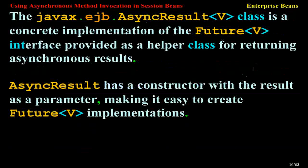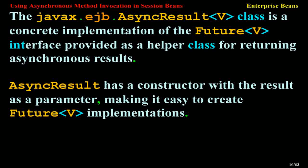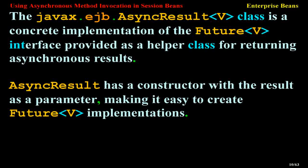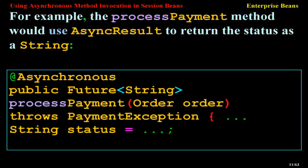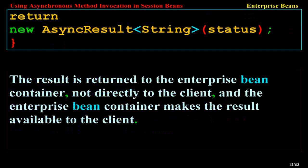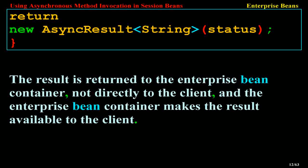The javax.ejb.AsyncResult<V> class is a concrete implementation of the Future<V> interface provided as a helper class for returning asynchronous results. AsyncResult has a constructor with the result as a parameter, making it easy to create Future<V> implementations. For example, the processPayment method would use AsyncResult to return the status as a string: @Asynchronous public Future<String> processPayment(Order order) throws PaymentException { String status = ...; return new AsyncResult<String>(status); }. The result is returned to the Enterprise Bean container, not directly to the client, and the container makes the result available to the client.